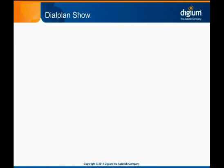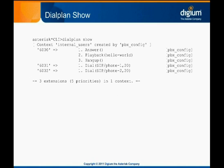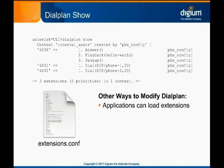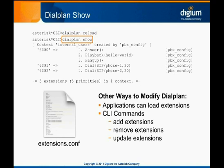If you spend much time administering a live Asterisk system, you'll find yourself needing to review its dial plan. Though you can learn a lot by browsing through the extensions.conf file, that's seldom the whole story. You should always run the CLI command 'dialplan show' to see exactly how Asterisk will route calls. Though extensions.conf is the primary way of configuring the dial plan, and the only way we spend much time on in this Asterisk Essentials course, there are other ways of getting contexts, extensions, and priorities added to Asterisk's live dial plan. Several applications, such as app_dial and app_queue, can load extensions. There are CLI commands that let you add, remove, and update extensions. And there's usually no way of being certain whether the extensions.conf you're looking at is the one that Asterisk read on its last reload. When in doubt, run 'dialplan reload' and then 'dialplan show' on the CLI to see Asterisk's live dial plan.